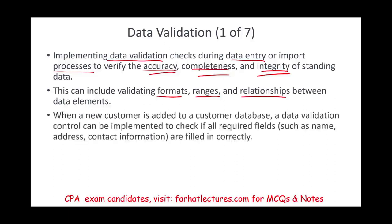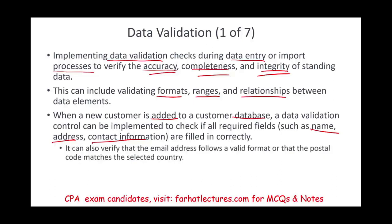For example, when a new customer is added to the database, a data validation control can check whether all required fields are present — the person's name, address, contact information, tax ID, and so on. It can also verify that the email follows a specific format, such as name@server.com or .edu or .gov, and that the address matches the postal code of the selected country.